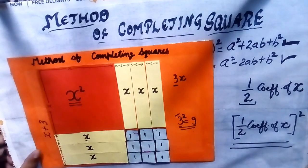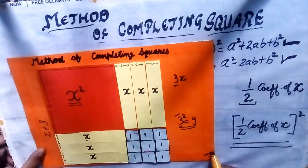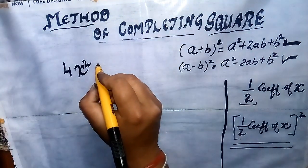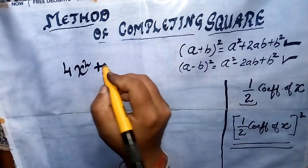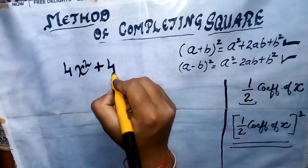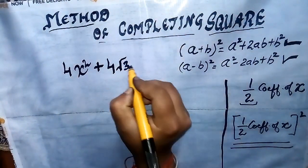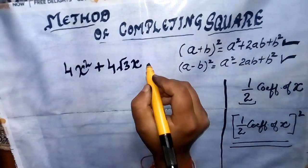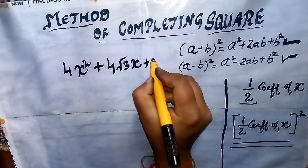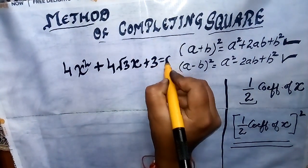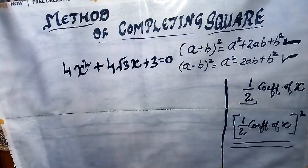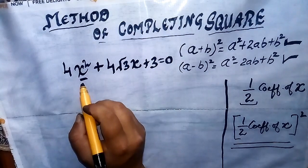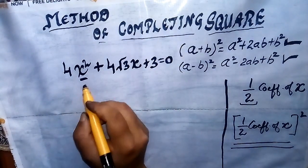Now let us solve one more question using this method from our exercise. The question is: 4x² + 4√3 x + 3 = 0. We have to solve this equation using the method of completing squares.